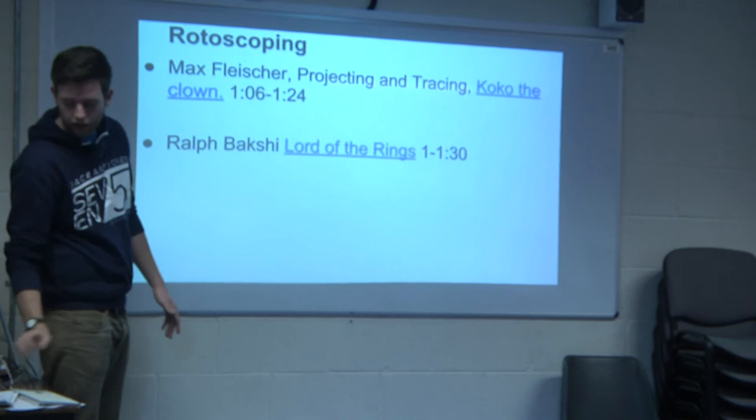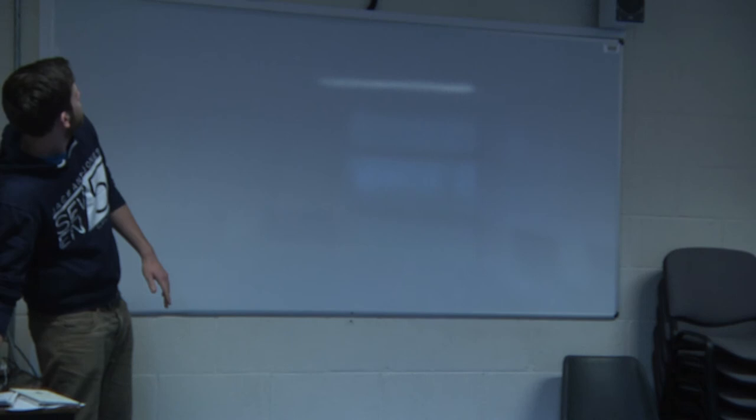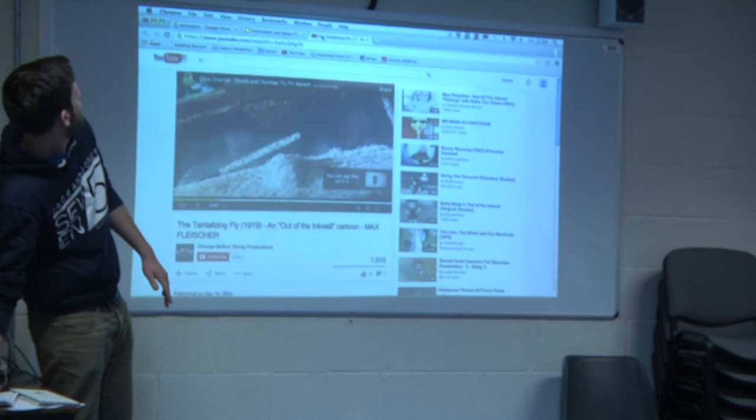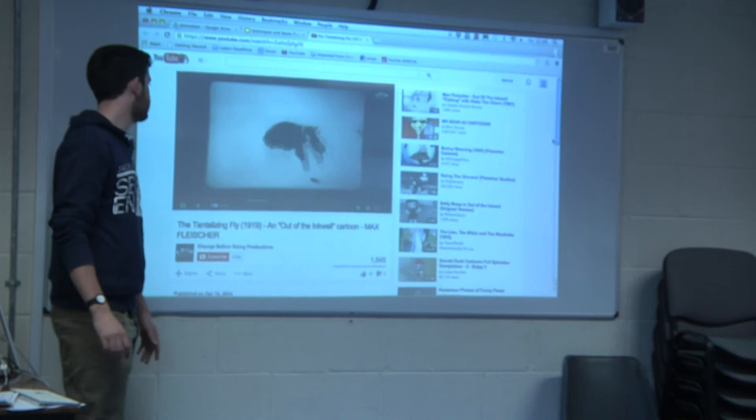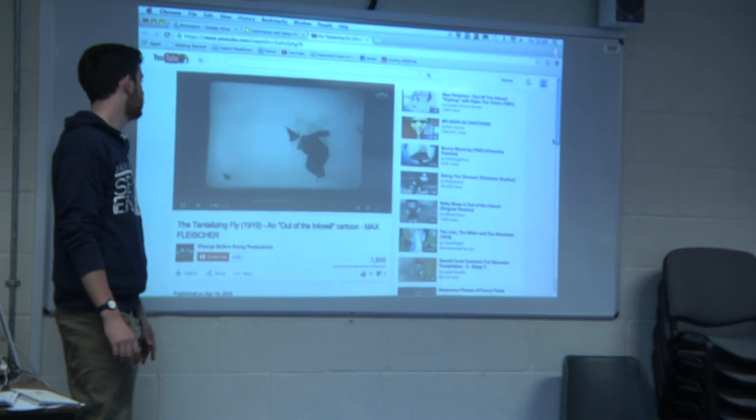One of the first things the Fleischer brothers made using rotoscoping was Koko the Clown. As you can see, compared to other animation of the time, the movement is pretty fluid — it becomes quite human-like. Very fluid. It actually seems like watching a film, really.